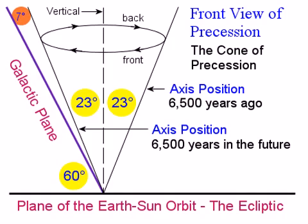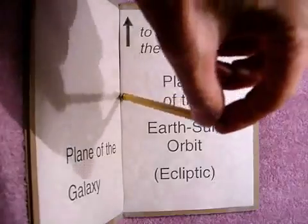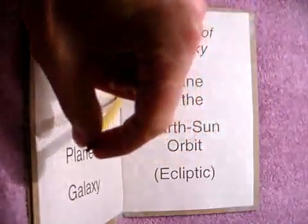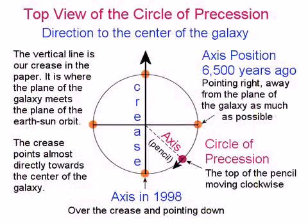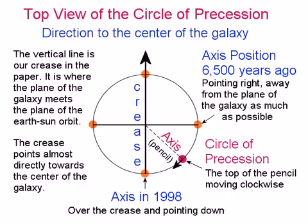This is when the pencil is closest to the folded half of the paper. Here is what it looks like from above. In just a few seconds, we will see a diagram of this important view. When we look down on our model from above, we see the top view of the circle of precession and the four parts of the Great Year. The vertical line is our crease in the paper — it is where the plane of the galaxy meets the plane of the Earth-Sun orbit — and this crease points almost directly towards the center of the galaxy. Basically, twice during the cycle the axis is directly over the crease, and twice the axis is exactly perpendicular to the crease. This naturally and equally divides the Great Year into four periods of six thousand five hundred years.